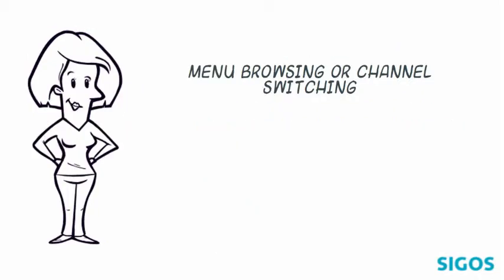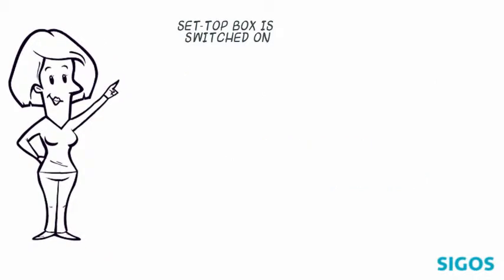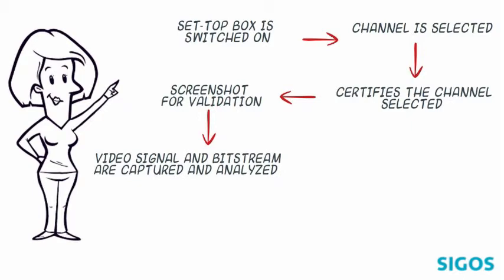The menu browsing or channel switching can be validated through a powerful text recognition engine. Here is an example of how a test works: the setup box is switched on, the channel is selected, and the infrared remote control test certifies that channel A in the setup box is streaming channel A as expected. This is performed via text recognition. The screenshot can also be used for validation. Both the video signal and the bitstream are captured and analyzed, thus generating an extensive set of KPIs.